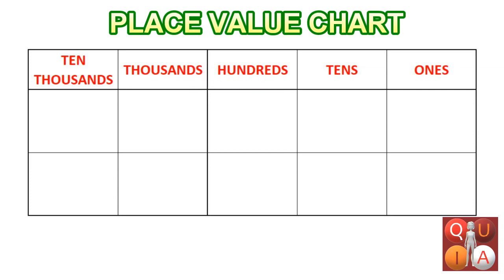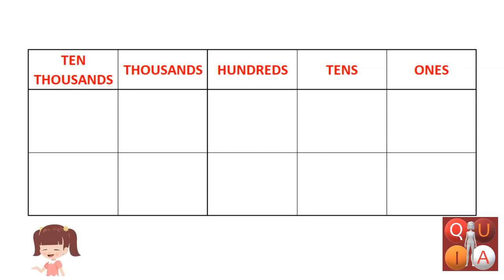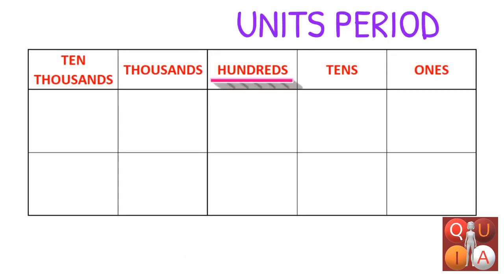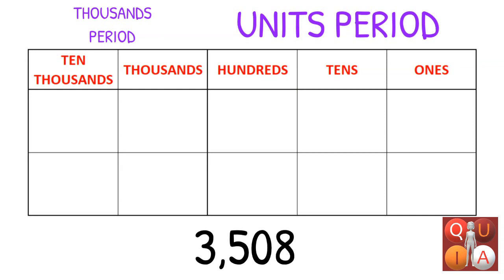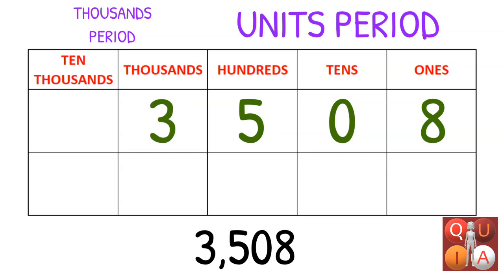In the leftmost column is the ten thousands place. Ones, tens, hundreds, thousands, and ten thousands are called place values. In the units period you will see hundreds, tens, and ones, while in the thousands period you will see thousands and ten thousands. Let's try placing the digits of 3,508 into its place values: eight is in the ones place, zero is in the tens place, five is in the hundreds place, and three is in the thousands place. Now it's your turn — let's try the number ten thousand.